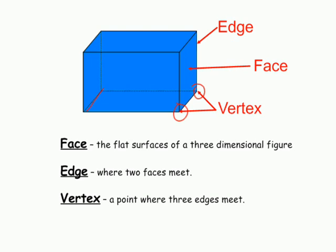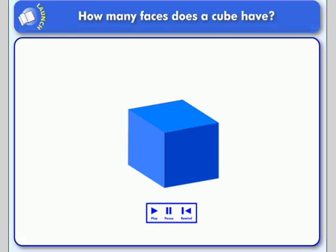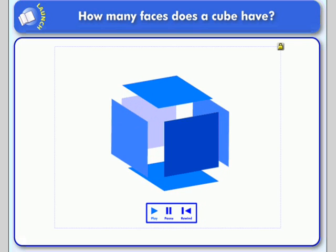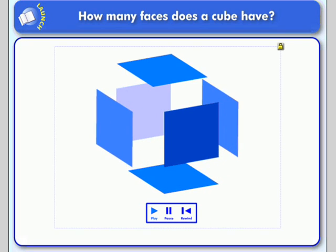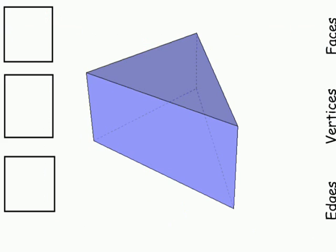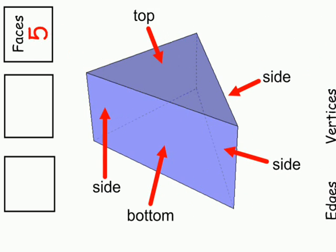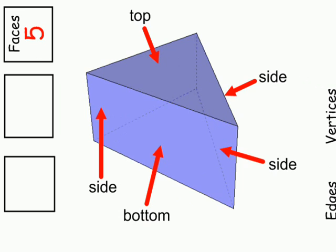How many faces would a cube have? If you look at a cube, it would have six different faces. Now let's take a look at this triangular prism — how many faces would it have? Take a minute and count. Well, if you said five, you're correct. It has a top and a bottom, and it has three sides.